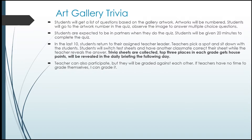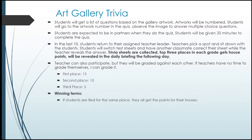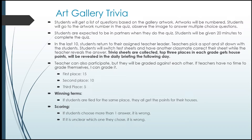Teachers can also participate, but they will be graded against each other and not against the students. If teachers have no time to grade it themselves, I can grade it for you. First place is 15 points, second place is 10, and third place is 5. If students are tied for the same place, they all get the same points for their houses. If a student chooses more than one answer, it is wrong. If it's unclear which one they circled in their multiple choice, it is also wrong.